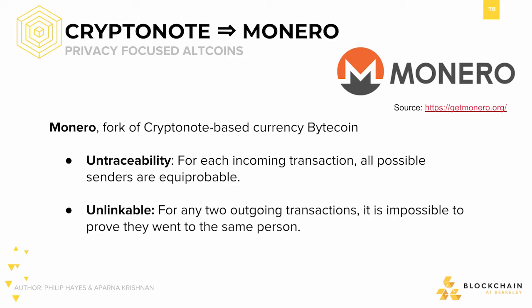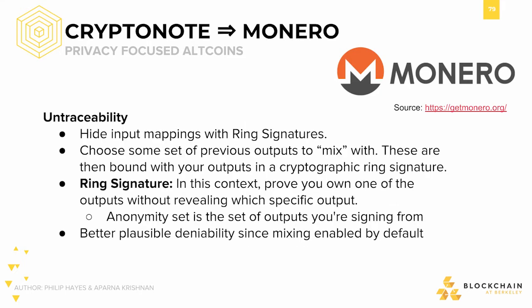Unlinkability means that for any two outgoing transactions, it's impossible to prove that they went to the same person, thereby hiding the identity of the receiver. At a slightly deeper level, Monero's functionality hinges on the use of an advanced topic in cryptography called ring signatures.